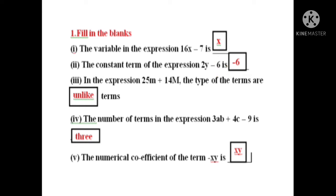In the expression 25M plus 14M, the type of terms are — notice small letter M and capital letter M — so these are unlike terms.